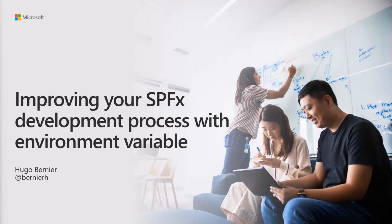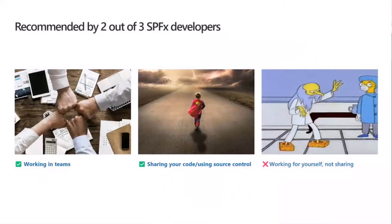What we're going to talk about today is recommended by two out of three SPFx developers. This is going to be useful to you if you're working in a team with multiple developers who use different URLs for their development tenant. It's also for anyone who's sharing their code — people who are writing samples and things like that. If you're sharing code, you probably don't want to show your tenant URL when sharing it with other people.